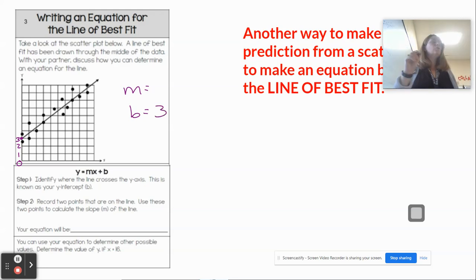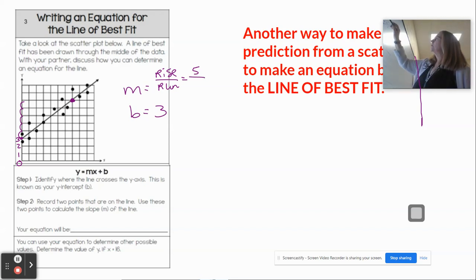In my slope, I'm going to find two perfect points from my line of best fit, not from my data points, but from my line of best fit. So I'm going to find two perfect points. I'm going to look here, here. I'm going to use this one way up here, and I'm going to 1, 2, 3, 4. My rise is 5. And then I have to find my run. 1, 2, 3, 4, 5, 6, 7. So my slope would be 7.